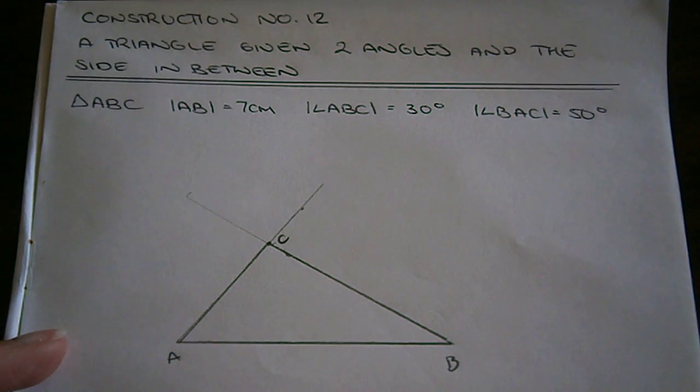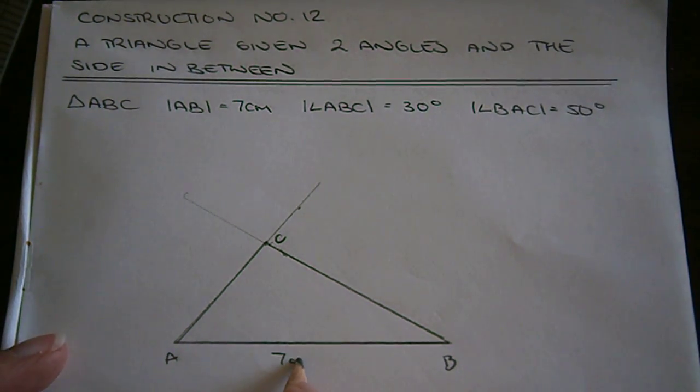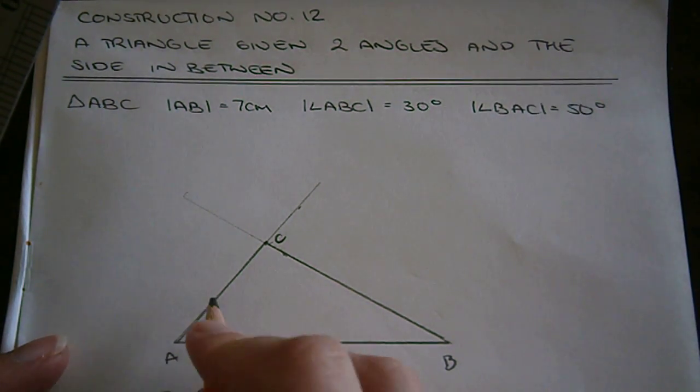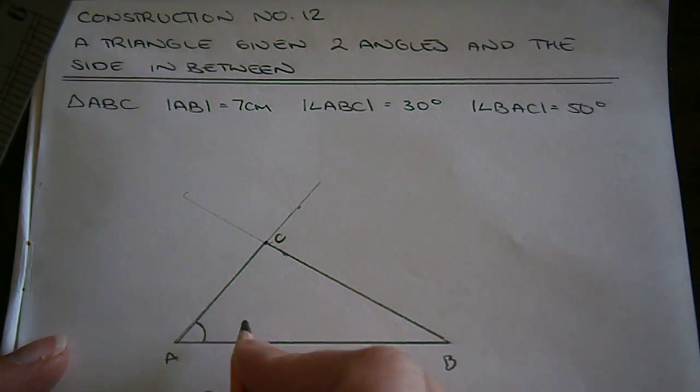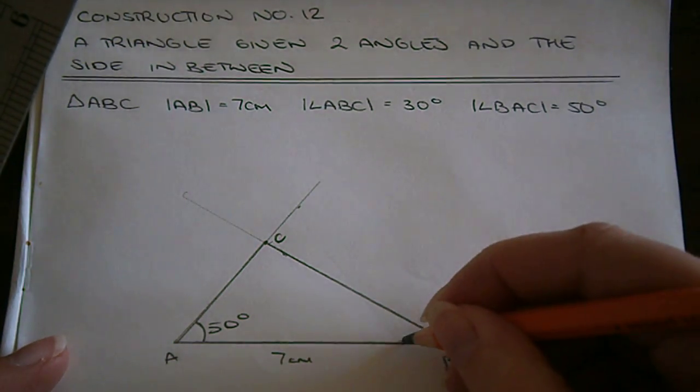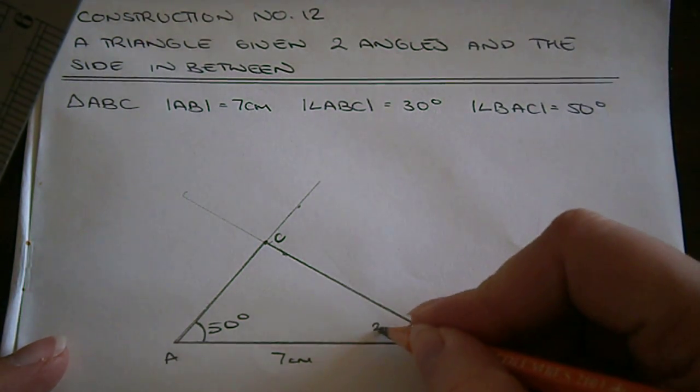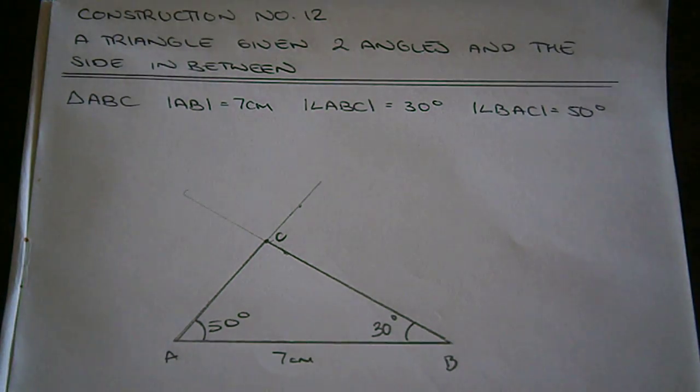Marking in AB is 7 centimeters, this angle here, BAC is 50 degrees and ABC is 30 degrees. And there's our triangle. Thank you.